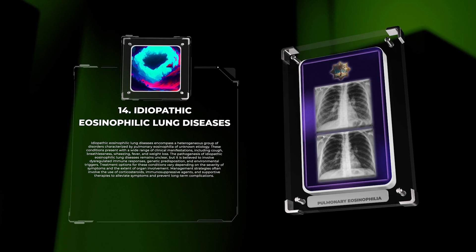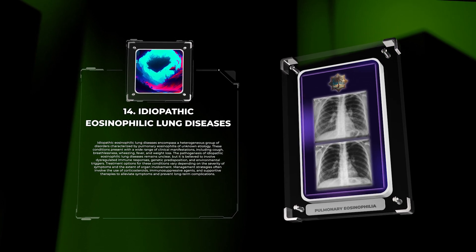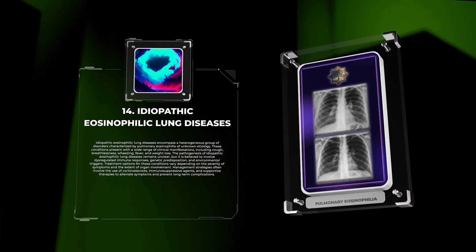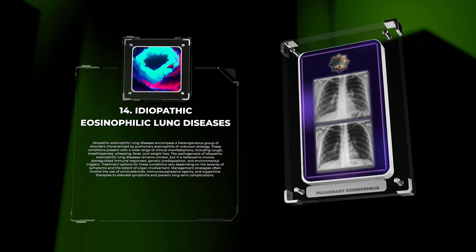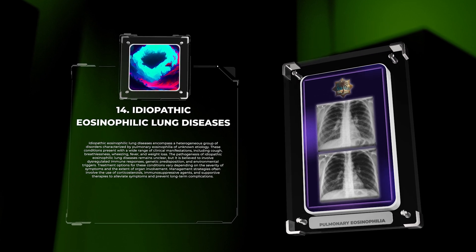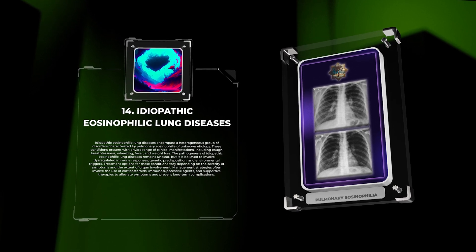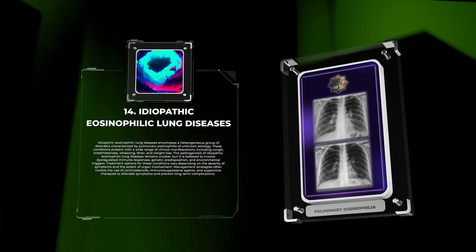The pathogenesis of idiopathic eosinophilic lung diseases remains unclear, but it is believed to involve dysregulated immune responses, genetic predisposition, and environmental triggers.